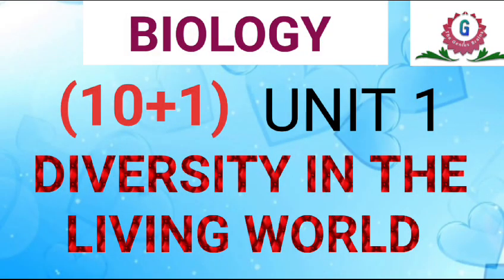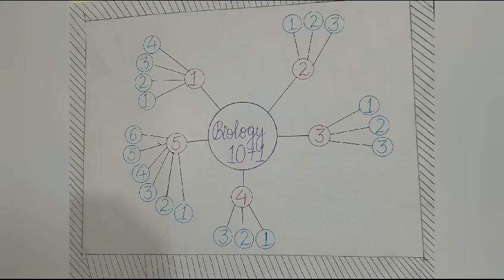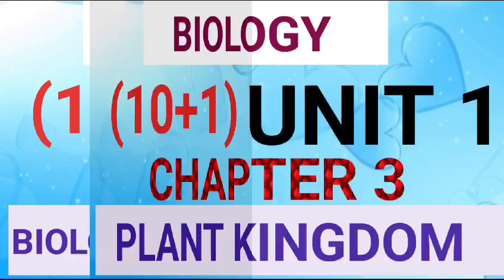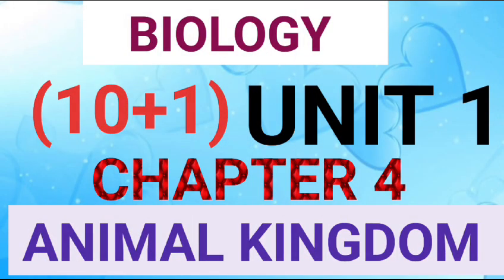The Living World—four chapters are called The Living World, Biological Classification, Plant Kingdom, and Animal Kingdom. Now we have talked about three chapters, and the last chapter is Animal Kingdom.